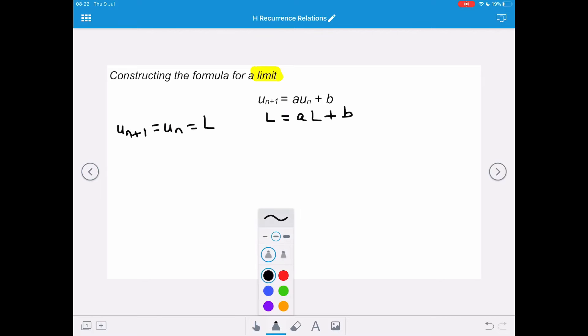We need to do some rearranging, so we're going to take away the aL on the right-hand side and take it away from the left-hand side as well. So we get L minus aL equals b. Now we need to take out a common L as a factor. So we've got L(1 minus a) equals b. And now we want to isolate that limit on its own, so we're going to divide both sides by 1 minus a.